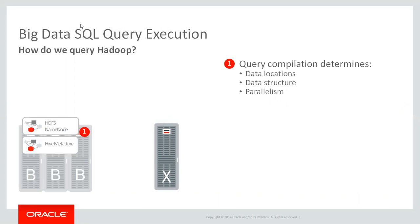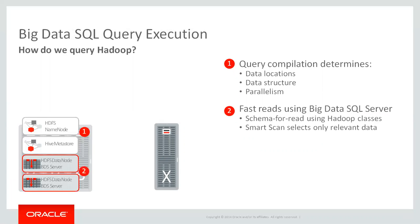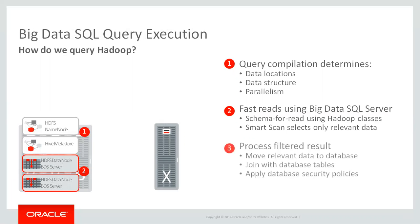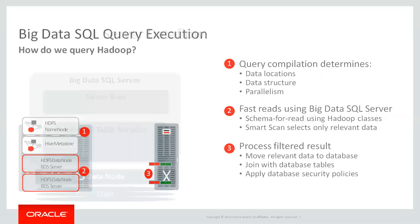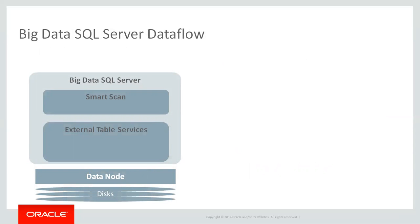That metadata stores data location, data structure, and other meta information about directories or subdirectories which you're going to scan. Then the database does query planning, starts the actual scan, filters out all unnecessary data, prunes all unnecessary columns, and moves back a small piece of data to the database side. Then we do final transformation — for example, a join between an external Oracle HDFS table and an Oracle internal table within the same query.